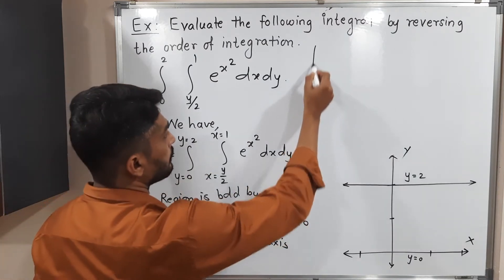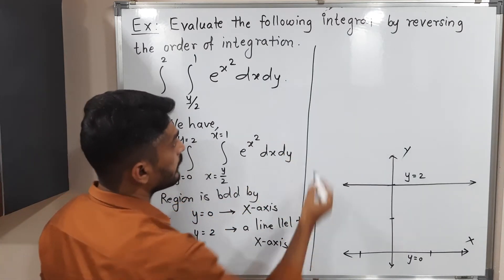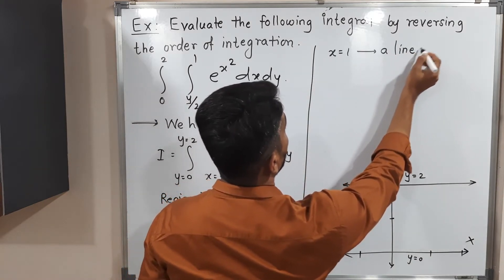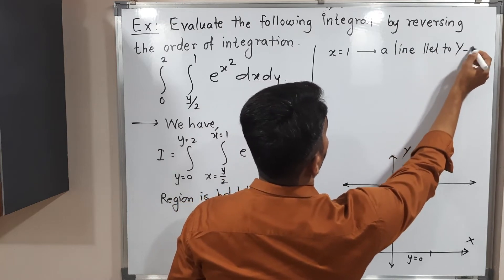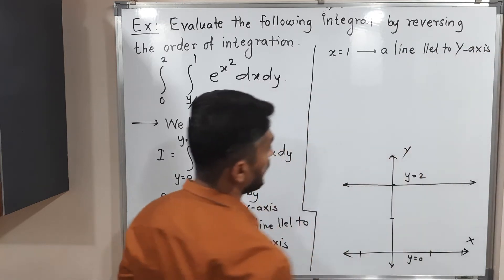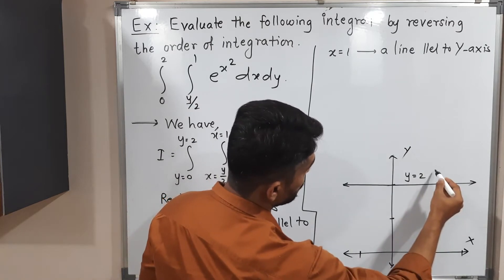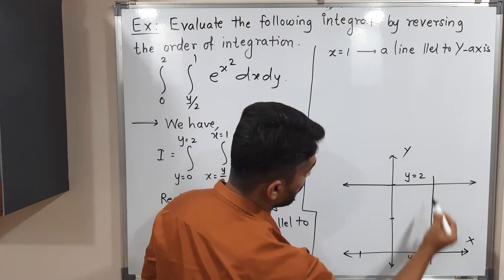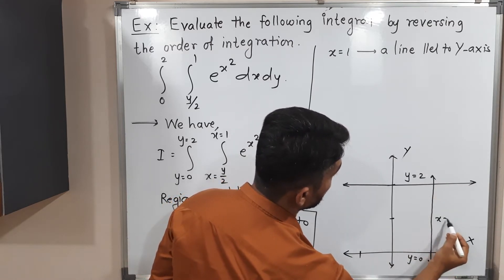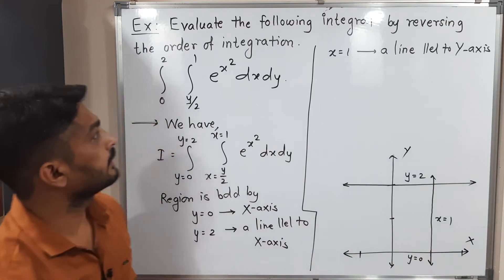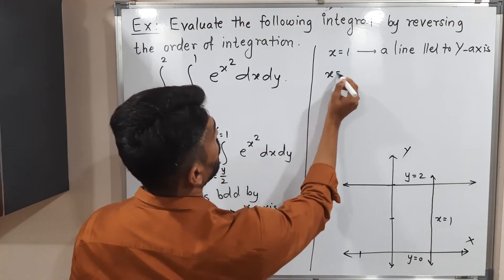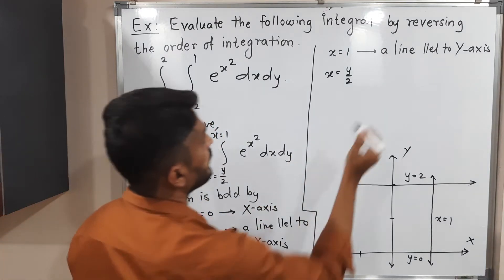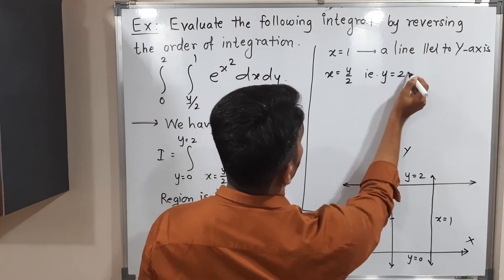Next, x equals 1. This is a line parallel to the y-axis which passes through x equals 1. And we also have x equals y over 2, or equivalently y equals 2x. This is also a line since the power of x is 1 and the power of y is 1.